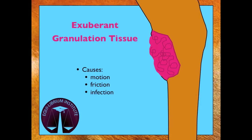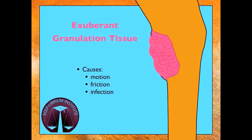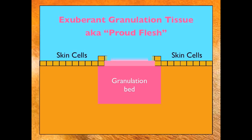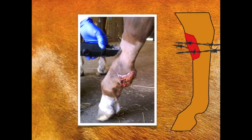Friction across the granulation bed can occur with unnecessary or overly frequent cleaning of the wound, or from a poorly applied bandage that slips and slides on the surface of the wound. This animation demonstrates how the skin cells are not able to grow across the surface of the granulation bed because the granulation bed is growing faster than the skin cells. This results in the three-dimensional pink cauliflower appearance of proud flesh extending beyond the wound margins.